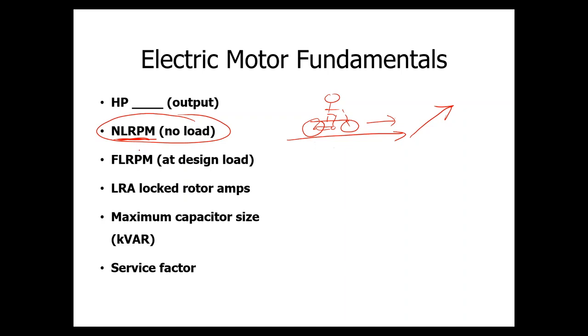We have this term called full load RPM, which is telling you how much the motor is actually slowing down when it's going up a full load or meeting its full capacity as far as shaft horsepower output. One other concept to get is called locked rotor amps, and that would be the situation where you're going up a hill and say you stop halfway.